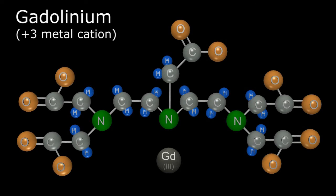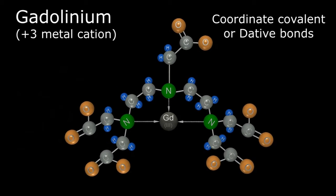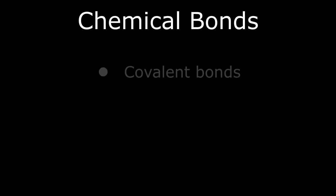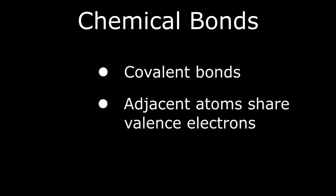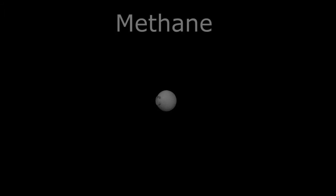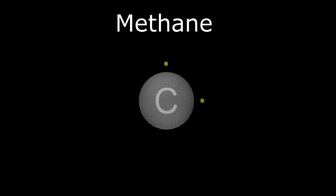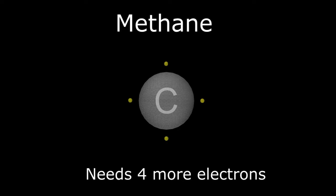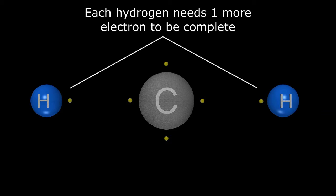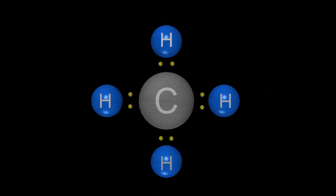Briefly reviewing: the type of bonds familiar from high school chemistry are called covalent bonds, where each atom shares one of its valence electrons with its atomic neighbor, allowing each to complete their valence subshells for molecular stability. For instance, the simplest hydrocarbon, methane, consists of a central carbon atom with four valence electrons requiring four more electrons to complete its unfilled orbitals, attached to four hydrogen atoms with one valence electron each, requiring one additional electron to complete its unfilled subshell.